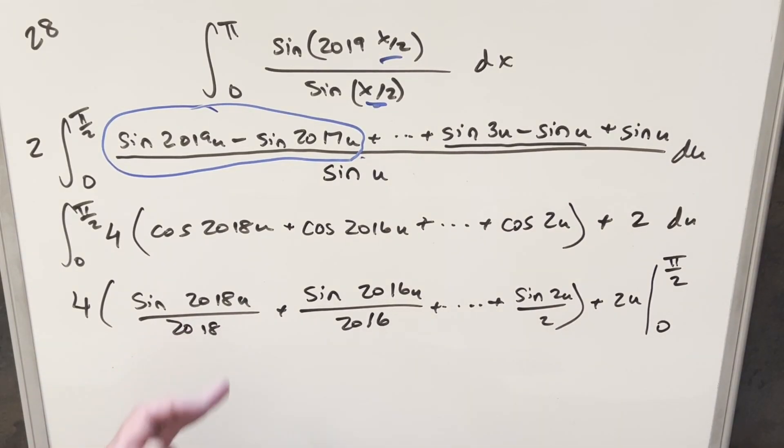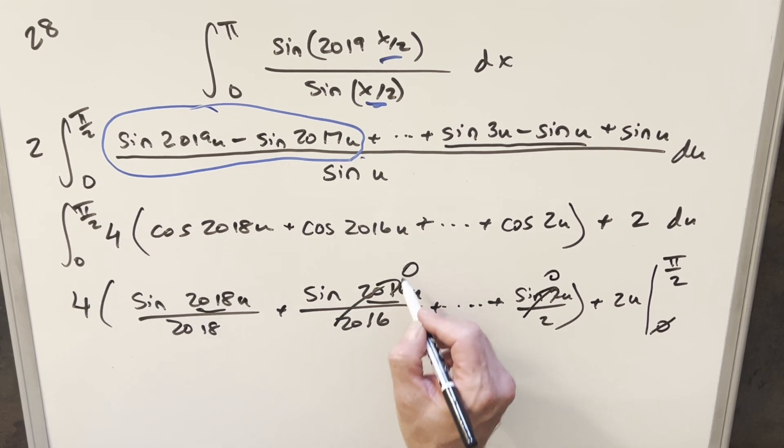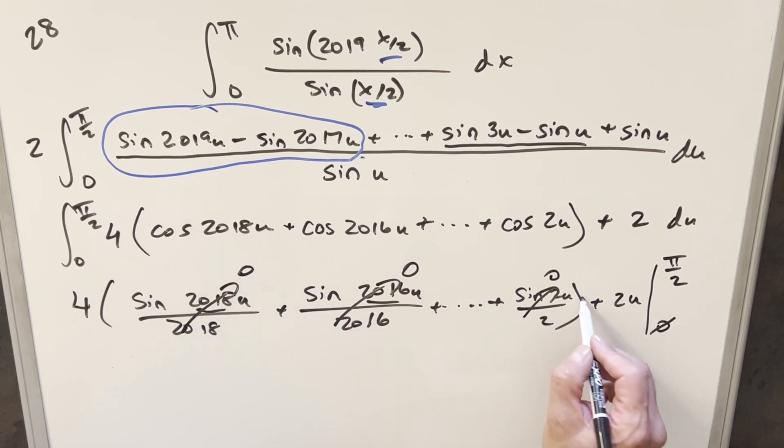But just notice, when you plug 0 in here, it's 0. All the sine terms at 0 are 0, so this piece is going away. And then evaluating pi over 2, that's interesting. So the thing is, all of our sine terms, we have even angles in every single case, all the way down to here. If you do sine 2 u times 2 times pi over 2, that's just pi, so that one's going to be 0. But really, because these are all even, every single one of these is going to 0, and so this whole part of the thing goes away. So all we need to do is just plug pi over 2 into 2 u.